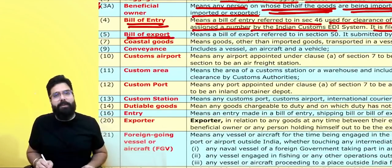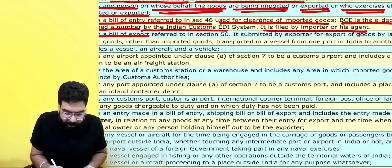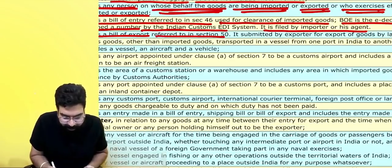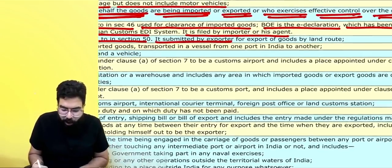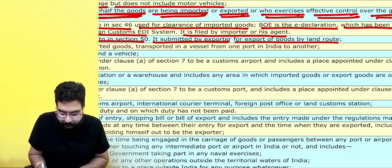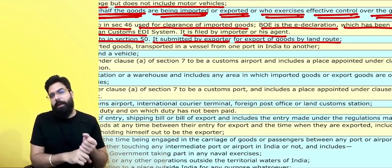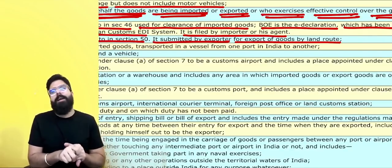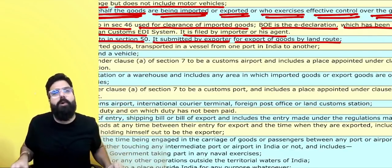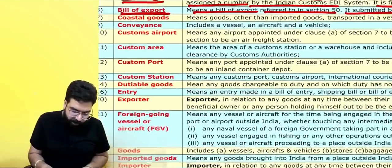What is a bill of export? A bill of export is referred to in Section 50. It is submitted by the exporter when he wants to export by land. When a person exports by ship or by air, he files a shipping bill. But if a person is exporting by land, he files a bill of export.